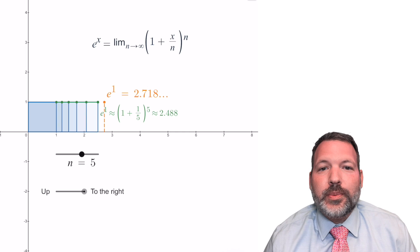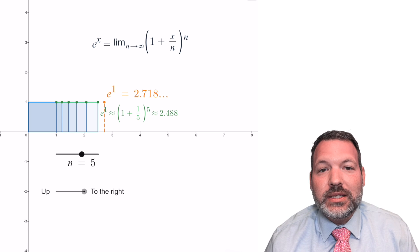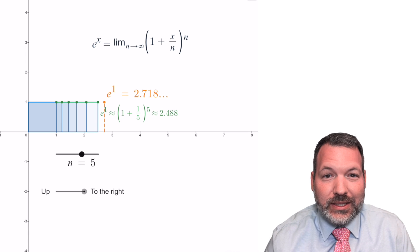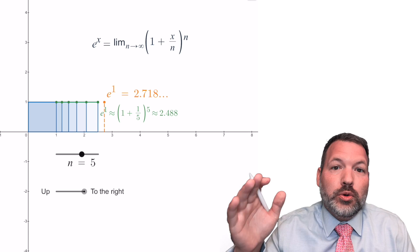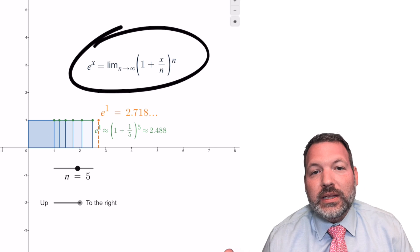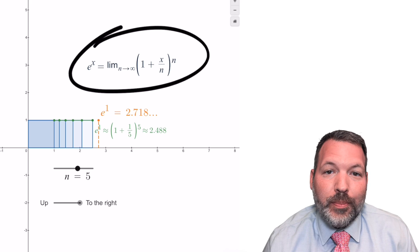If this is giving you flashbacks to e's definition itself, good, because that's exactly what's going on. E to the x is defined as the limit as 1 plus that number x gets divided into smaller and smaller portions, but then that sum raised to the power of the number of portions. In mathematical symbols, we call that the limit as n goes to infinity of 1 plus x over n raised to the nth power.